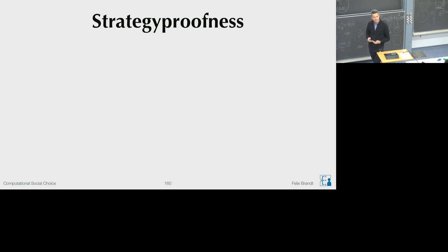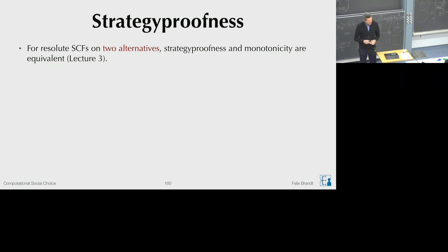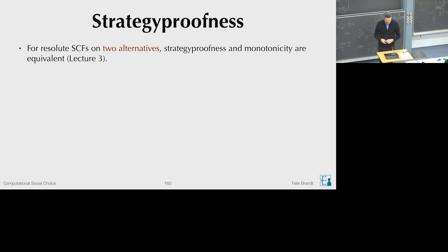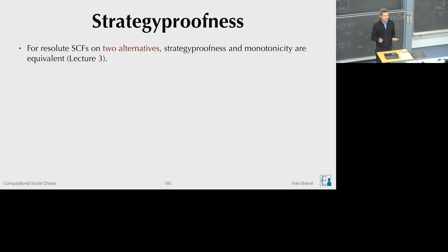Let's recap what we know about strategy-proofness so far. In lecture three, we saw that if we have only two alternatives, strategy-proofness is equivalent to monotonicity for resolute social choice functions. As a consequence, for two alternatives we have very positive results — there are many functions satisfying monotonicity. Perhaps the most natural one is majority rule: if we have two alternatives we can just do majority rule, and nobody is better off by lying about their preferences.